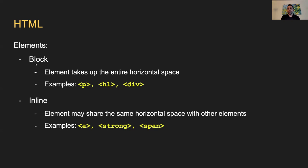Block level elements take up the entire horizontal space, the entire line they're on. For example, the P tag (paragraph), H1 (header one), or div - these take the entire horizontal space. Inline elements are different: they can share horizontal space and be nested together on the same line. Common inline elements include the anchor tag, the strong tag, and the span tag.